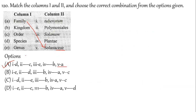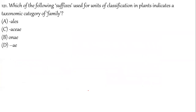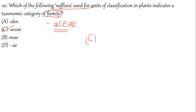Question 121: Which suffix is used to denote the family? Family always ends with '-aceae.' So the correct answer is option C — examples: Fabaceae, Liliaceae, Solanaceae. Note: there was a typing error in the options where C and D were interconverted, but option C with Fabaceae, Liliaceae, Solanaceae is the correct answer.